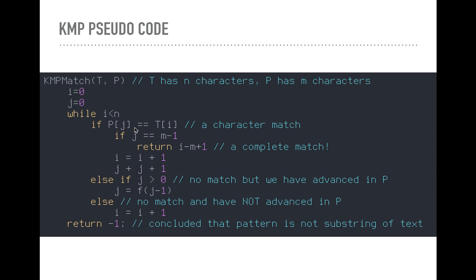So if the pattern at j equals the text at i, we have a character match. That's this if. This else if is no character match, but we've advanced in P. So we had found matches before, but now we've sort of messed up. And this is no match at all and have not advanced in P. So if we have a character match, if we're at the last character of the pattern, bingo, a complete match. If it's not the last character, we're going to increment i and j. So we're going to look at the next character of the pattern and the next character of the text.